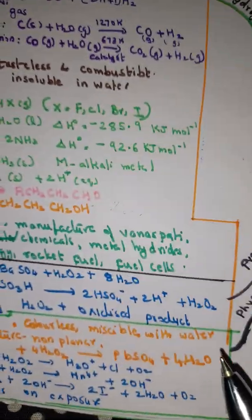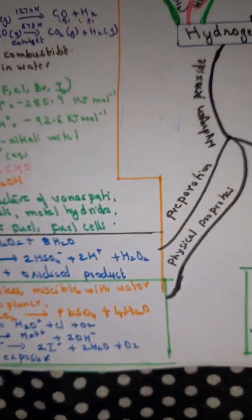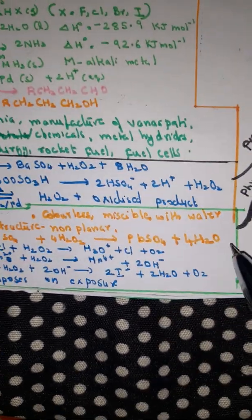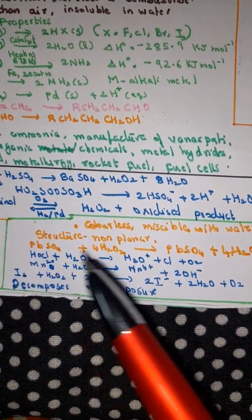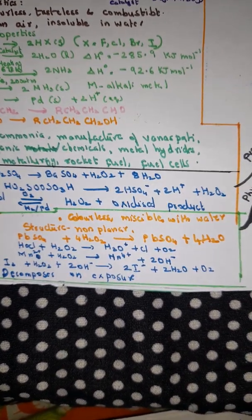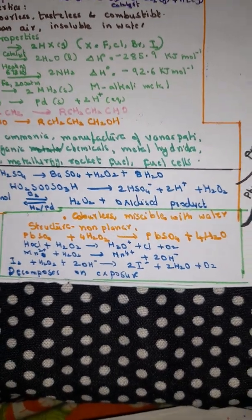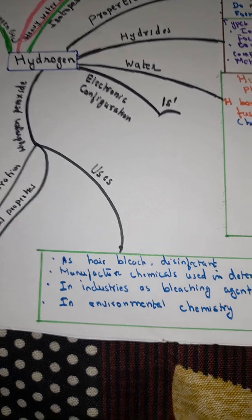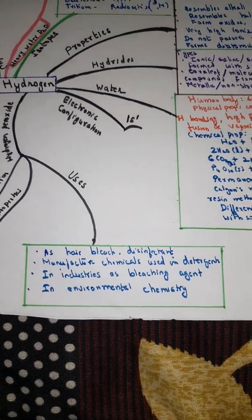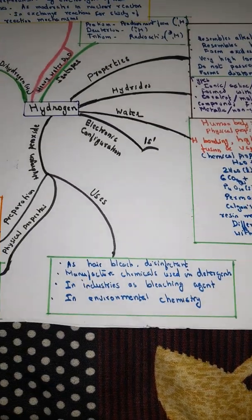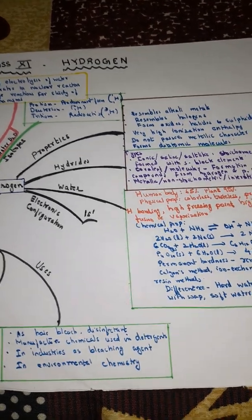Oxidized product is colorless, miscible with water. Physical properties of hydrogen peroxide are given in this table - colorless, miscible with water, structure non-planar, and equations are given here. You can take a screenshot. Uses include air bleach, hair bleach, disinfectant, manufacture of chemicals used in detergents and industries, and as bleaching agent in environmental chemistry.